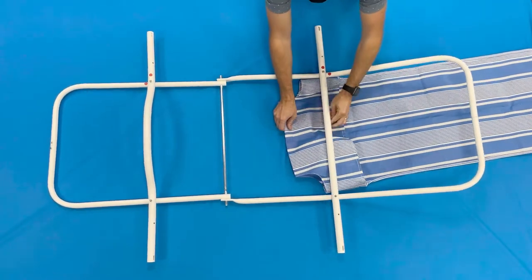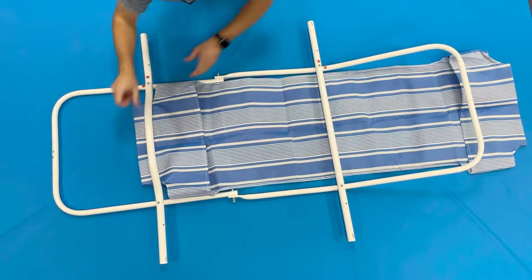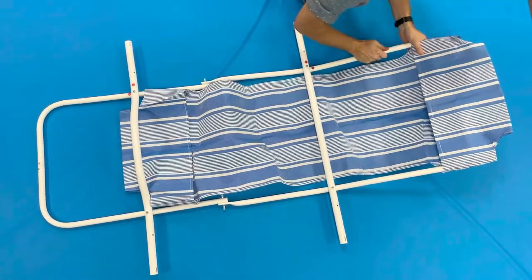Place fabric under the crossbars and over the aluminum rod. Take the foot pocket and insert it over the end of the curved seat portion of the assembled frame.